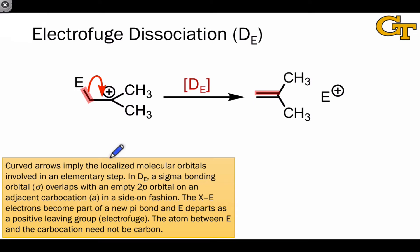The fact that there's a step called association of an electrophile suggests that there is a reverse step called dissociation of an electrophuge, and there absolutely is. It's the D sub E step.